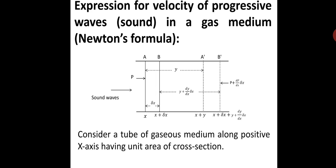In order to derive that, let us assume that the sound waves are propagating in a gas medium. In that gas medium, let us assume a tube of gas medium along the positive x-axis with unit area of cross section. In this tube of gas, let us consider two plane sections, one at A and the second at B. These two sections are at positions x and x plus delta-x from some arbitrary origin on the left side.